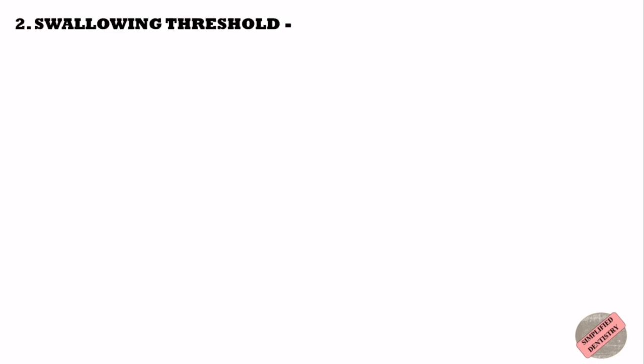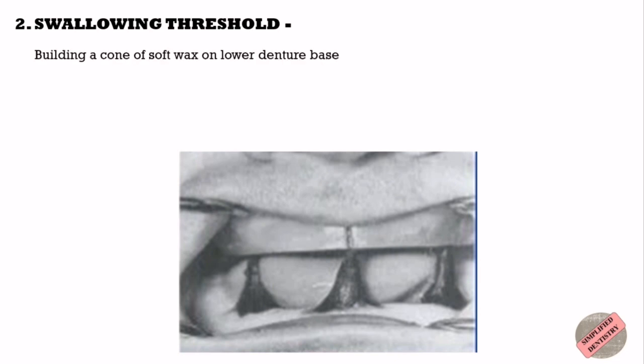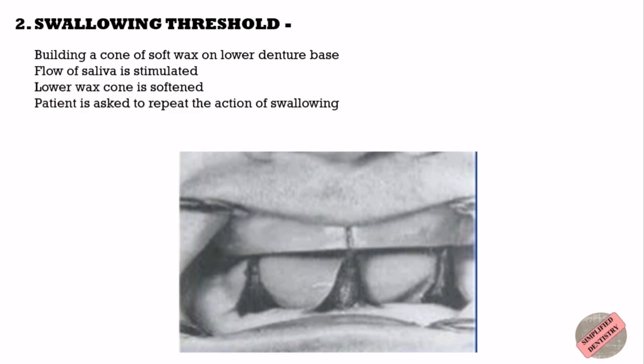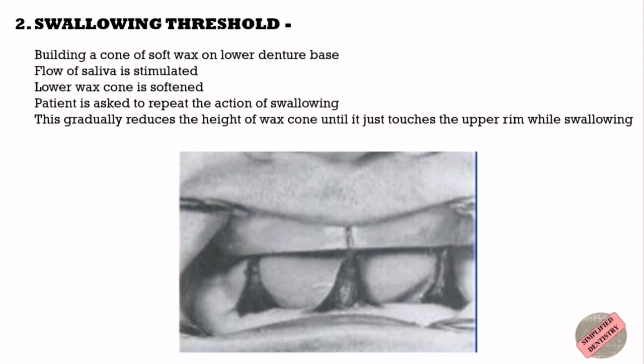The second physiologic method is the swallowing threshold. The concept that maxillary and mandibular teeth come into light contact at the beginning of the swallowing cycle is used as a guide to determine occlusal vertical dimension. The procedure involves building a cone of soft wax on the lower denture base such that it contacts the upper occlusal rim when the jaws are open. Flow of saliva is stimulated by a piece of chocolate, the lower wax cone is softened, and the patient is asked to repeat the action of swallowing. This gradually reduces the height of the wax cone until it just touches the upper rim while swallowing.